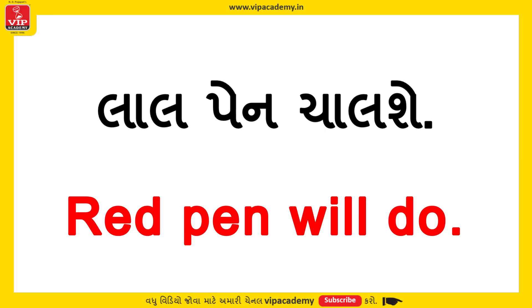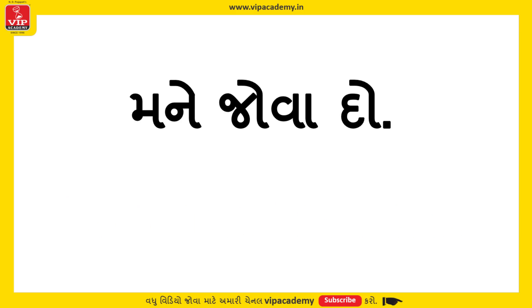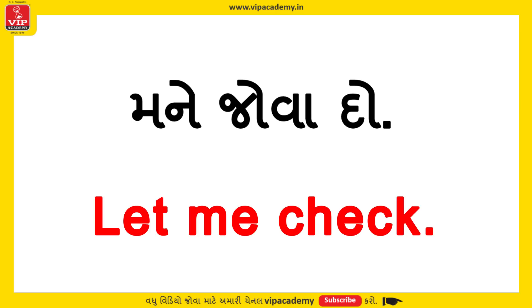'Red pen will do' means a red pen is acceptable. Next, 'let me check' — in Gujarati, 'mane jova do' or 'mane check karva do' — means you want to verify something. So 'let me check' is the English phrase.